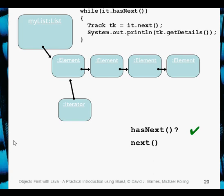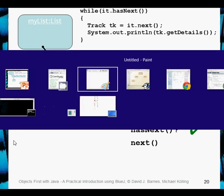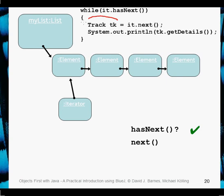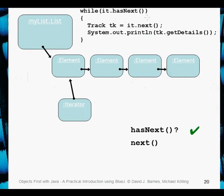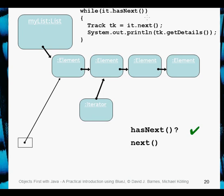You can only call the next method once. Calling the next method does a couple of things: it will return the element at the current position in the list, and we usually use an assignment for this. As you can see here, we've created a local variable 'tk', and then we use the 'it' object - next() will return that object, which will be our first element in the list. The next method also points the iterator at the next element. Once we've done the System.out.println using our local variable to get the details of the track, we'll go back to the brace and start the loop all over again.